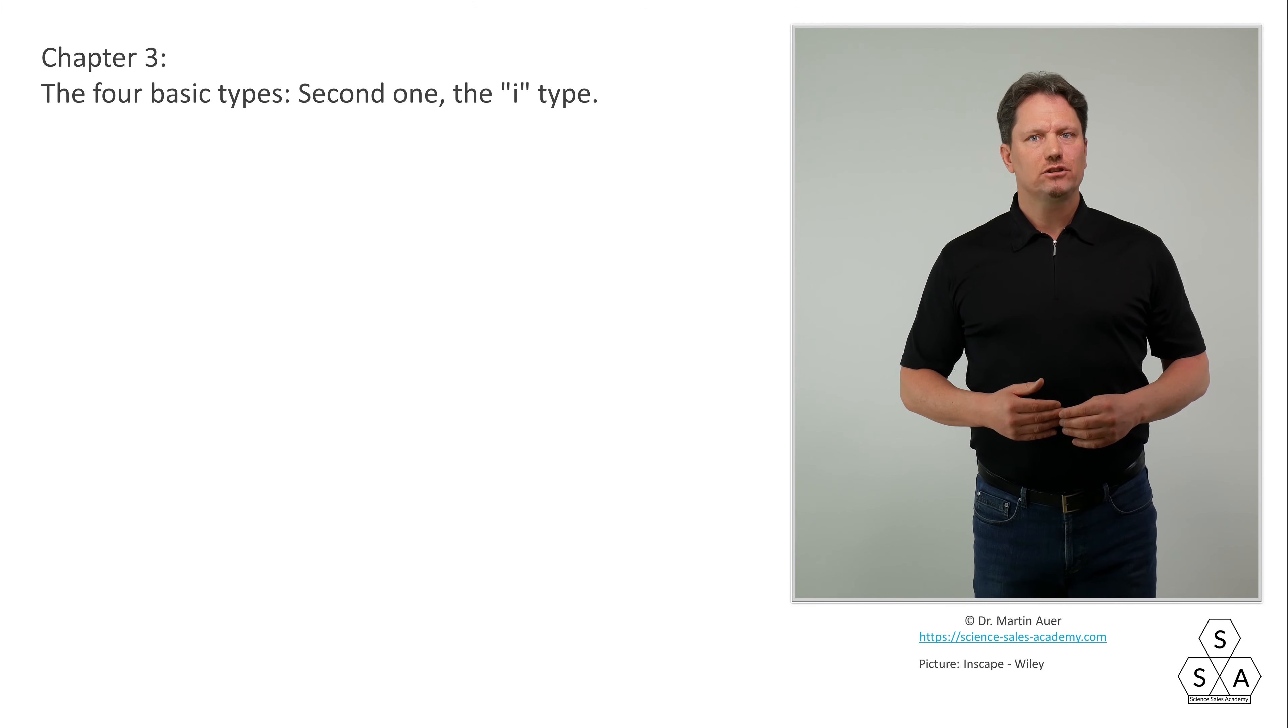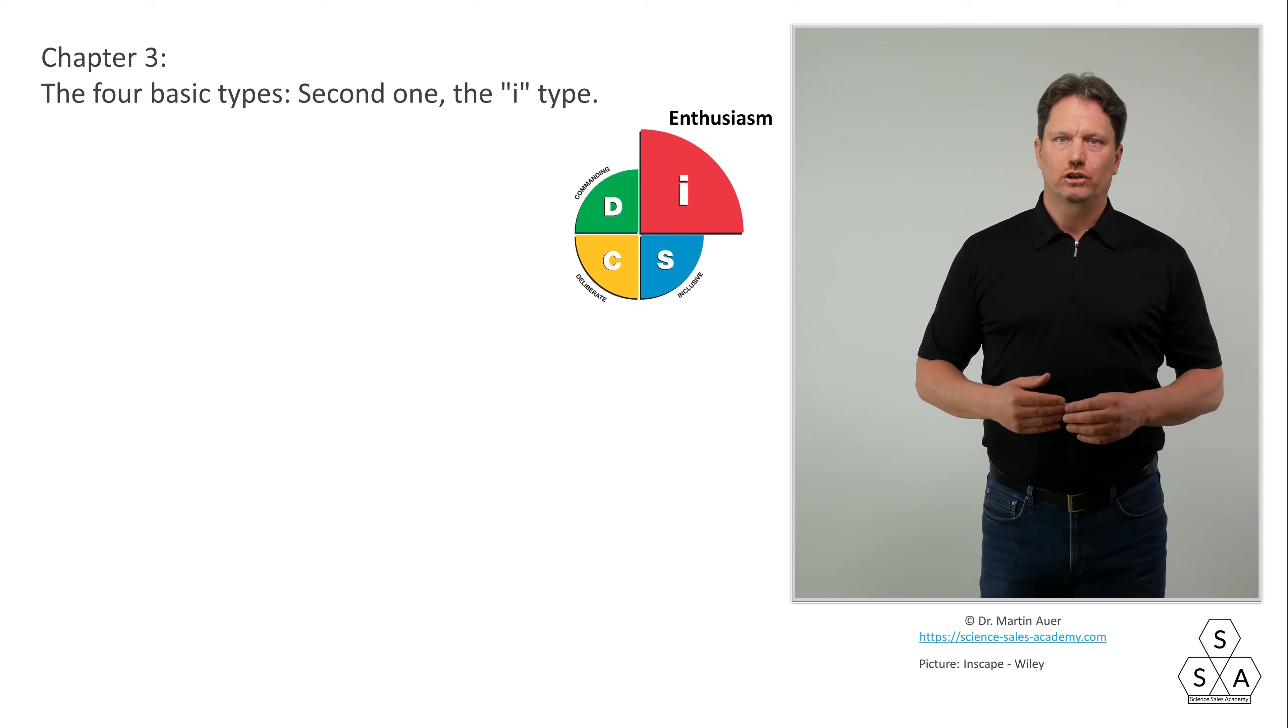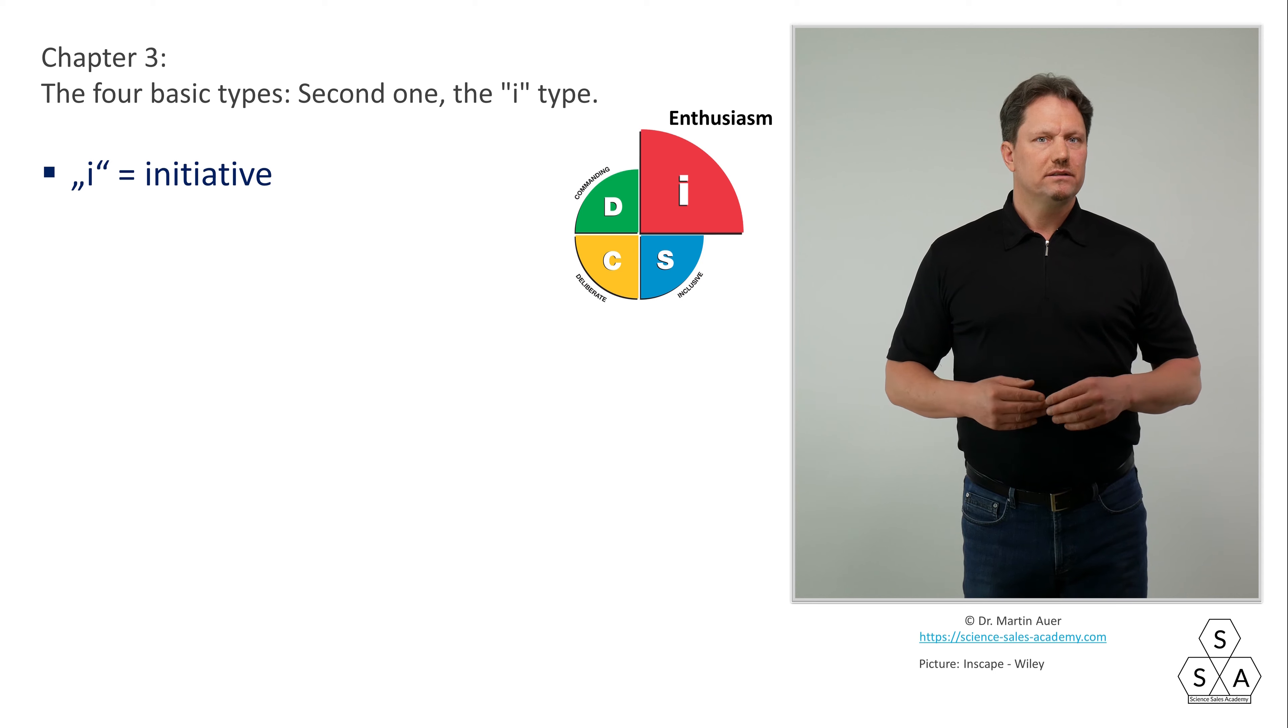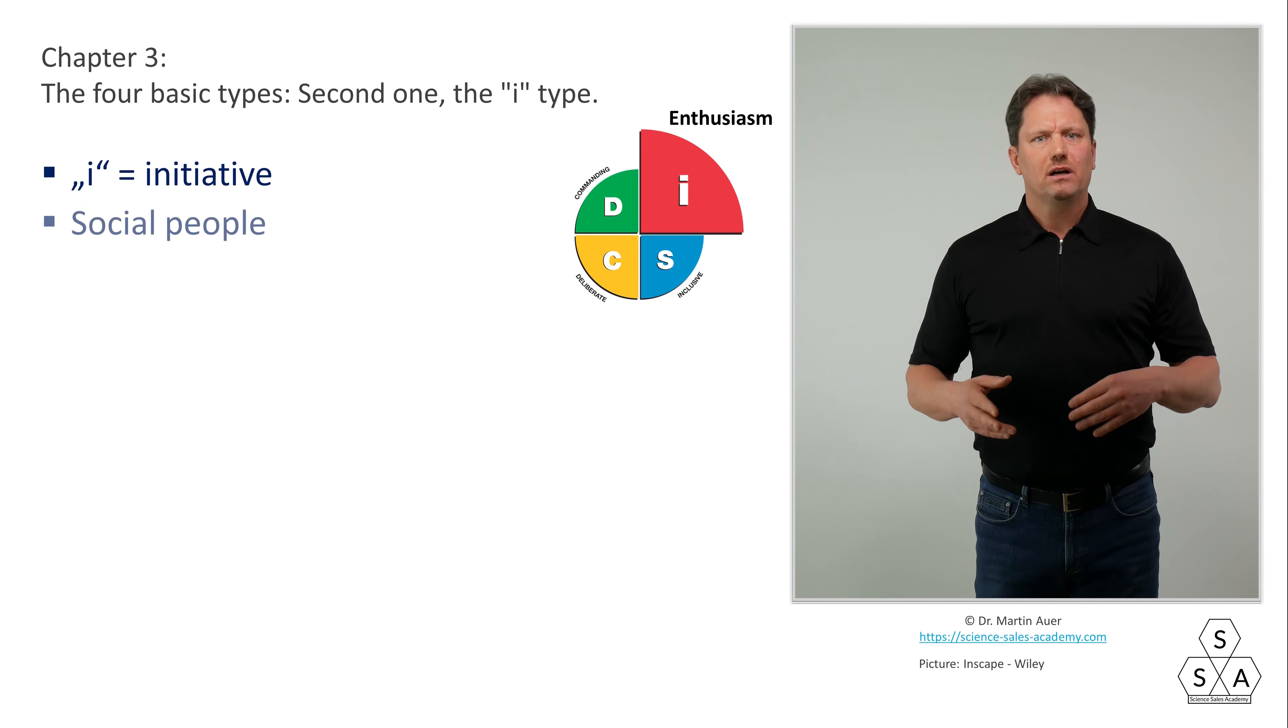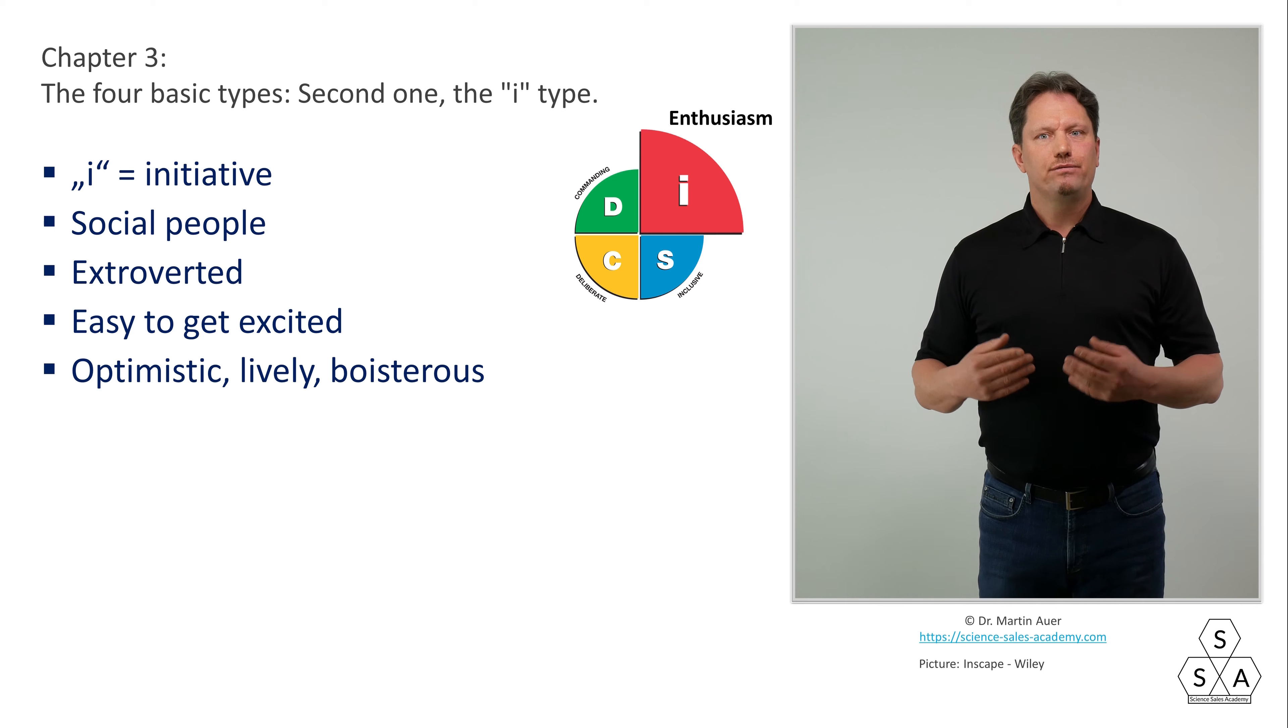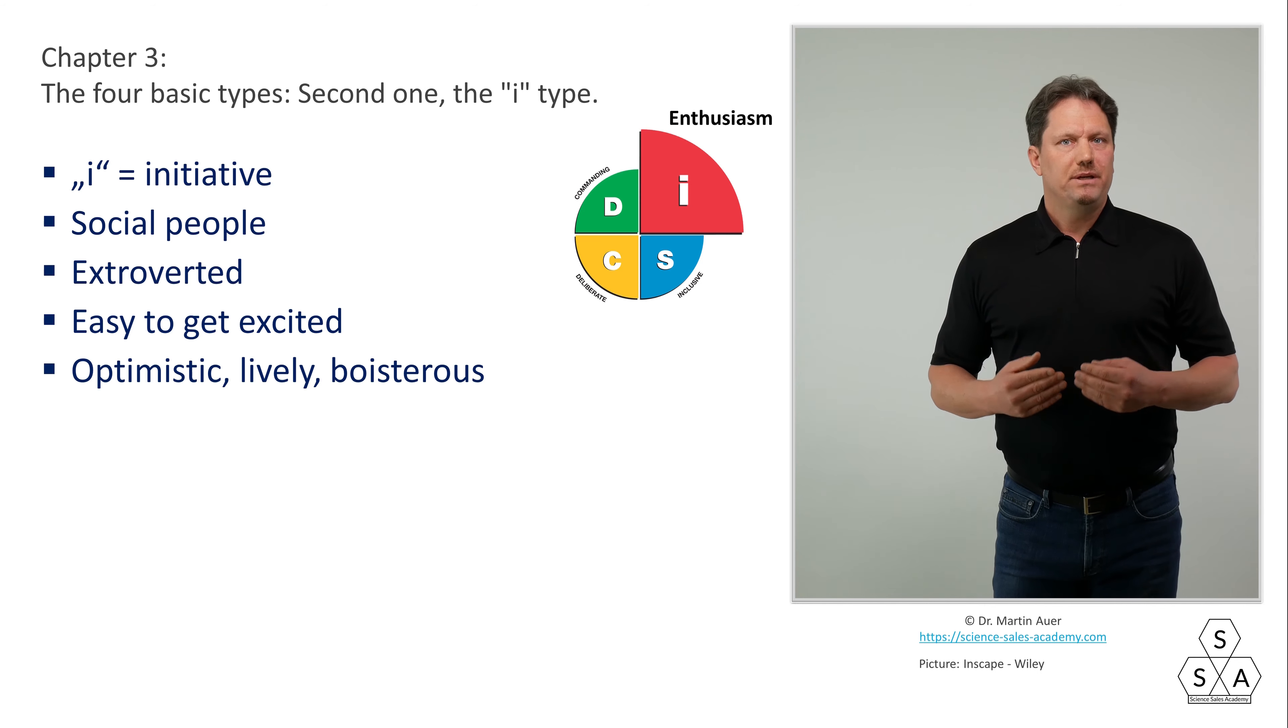Chapter 3: The 4 Basic Types - The I-type. Moving one step forward in a clockwise direction in our circular Wiley DISC model brings us to the next quadrant, the I-type. The I stands for initiative. This type is located in the upper right quadrant and is marked red. I-types are social people, mostly extroverted, easy and quick to get excited about things, optimistic, lively, boisterous. They feel well in the group, even better in a group of like-minded people.